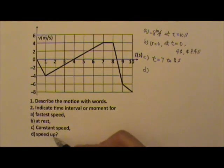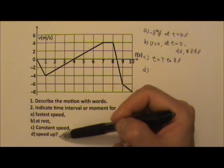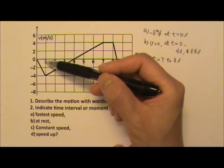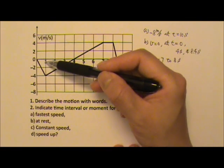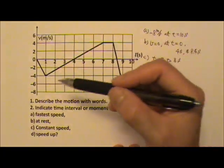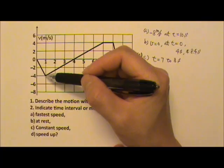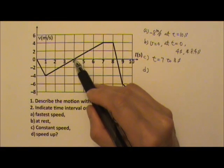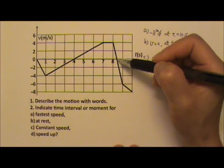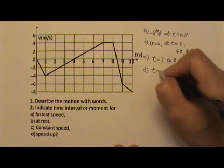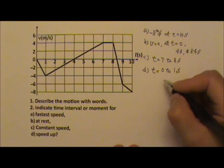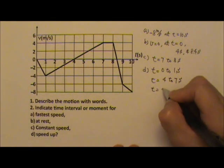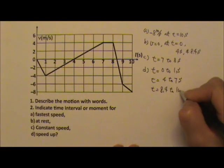Speeding up means the magnitude of the velocity increases — the object's graph is getting away from 0 meters per second. So from 0 to 1 second, the object is speeding up. From 1 to 4 it's slowing down because it's getting to 0. Then it speeds up again from 4 to 7. It slows down, then speeds up again. So the intervals where the object is speeding up are: t equals 0 to 1 second, t equals 4 to 7 seconds, and t equals 8.4 to 10 seconds.